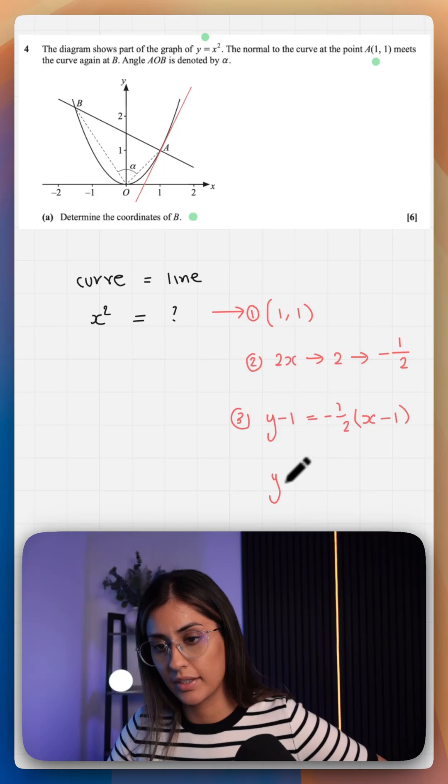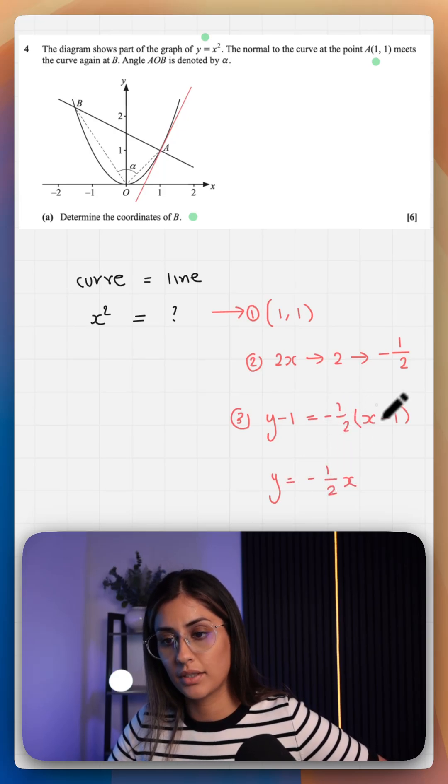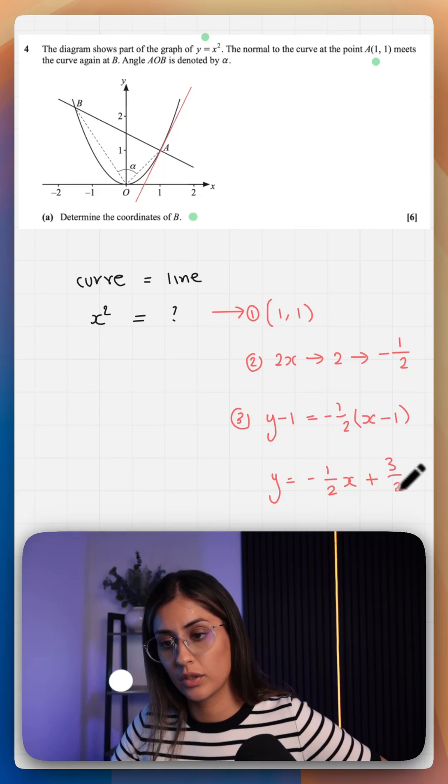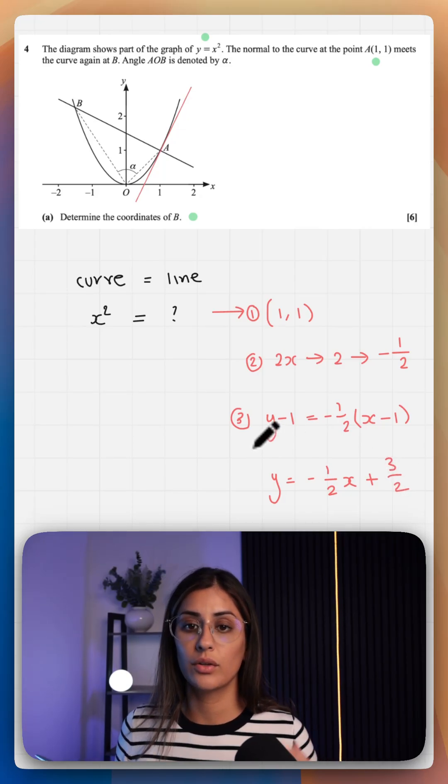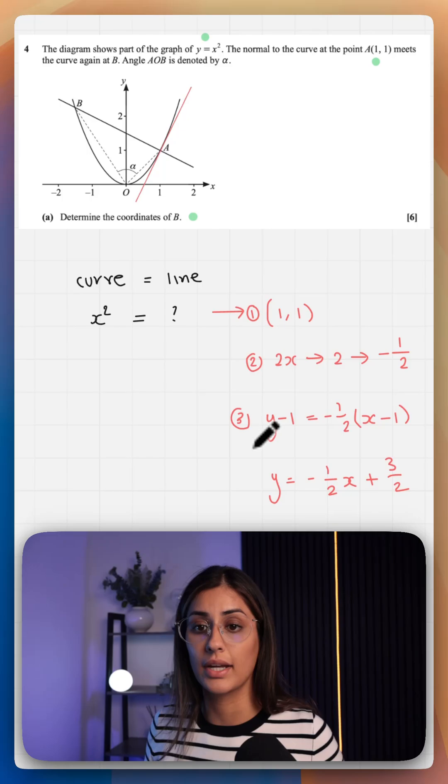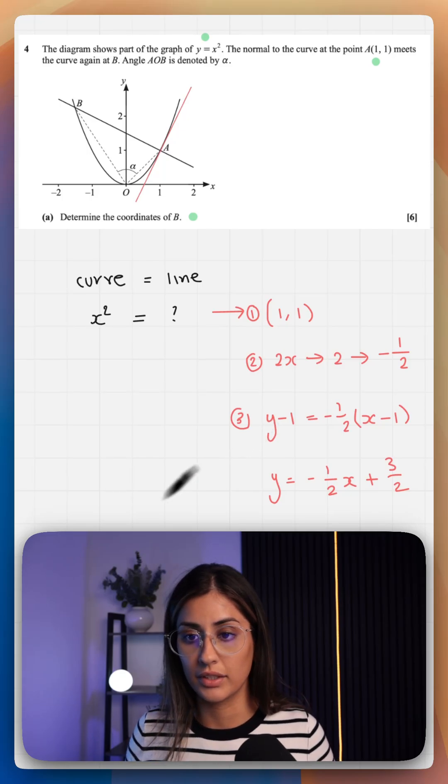So let's simplify. That gives y equals minus 1/2 x plus 1/2 plus 1, which is plus 3/2. So that's the equation of our normal. And where we want to find B, we need to just equate the two.